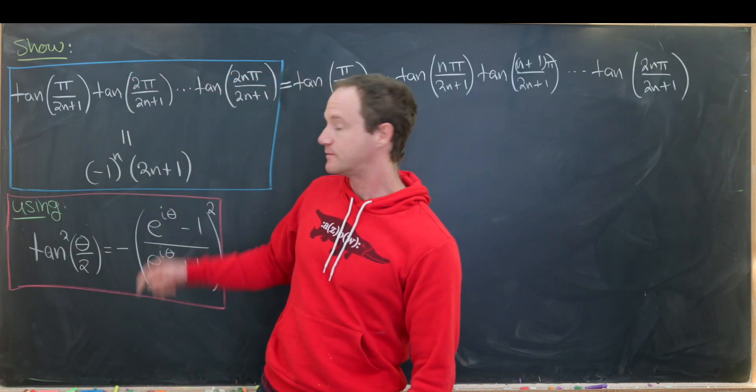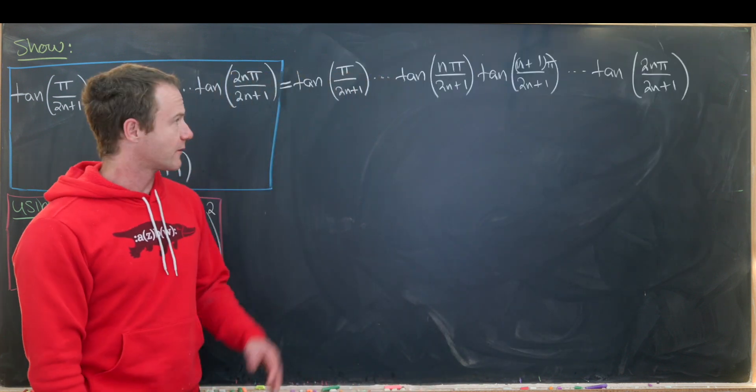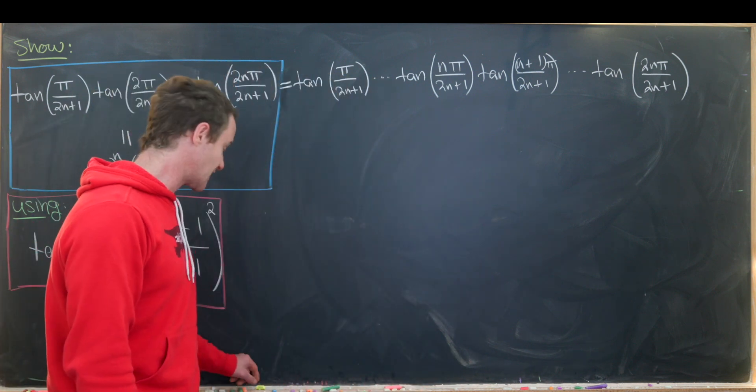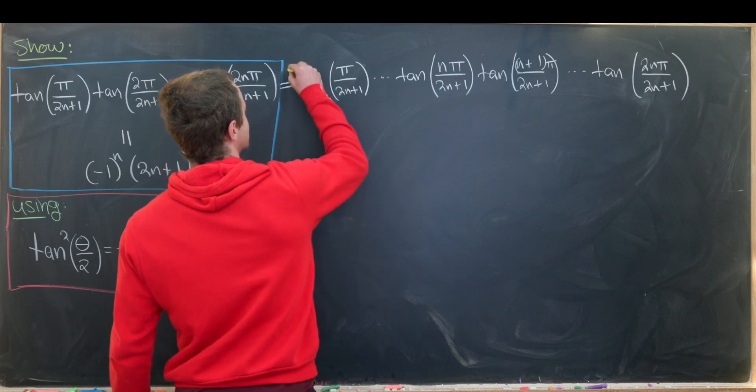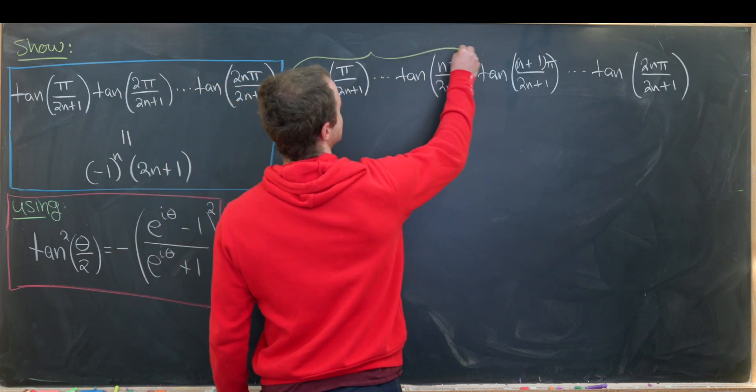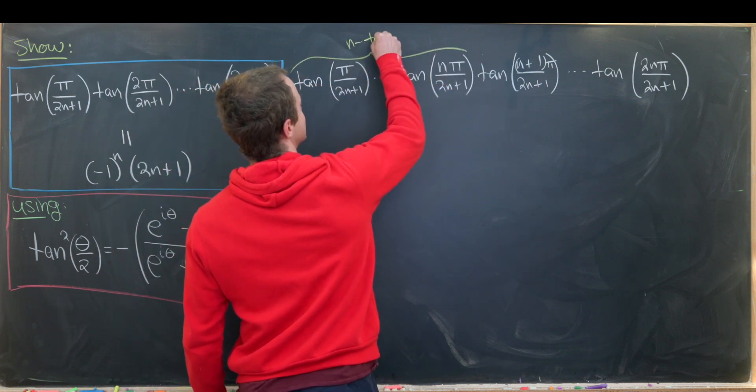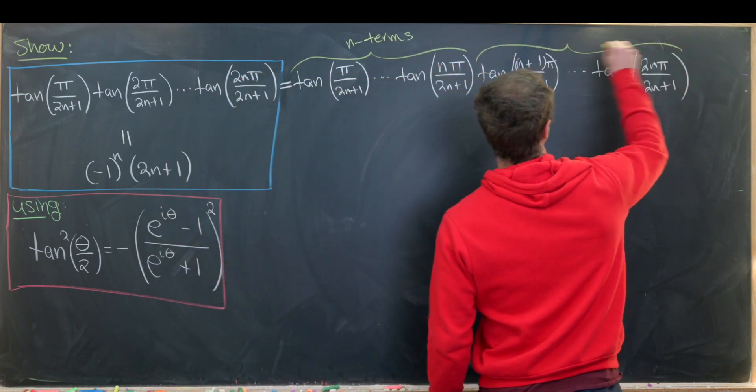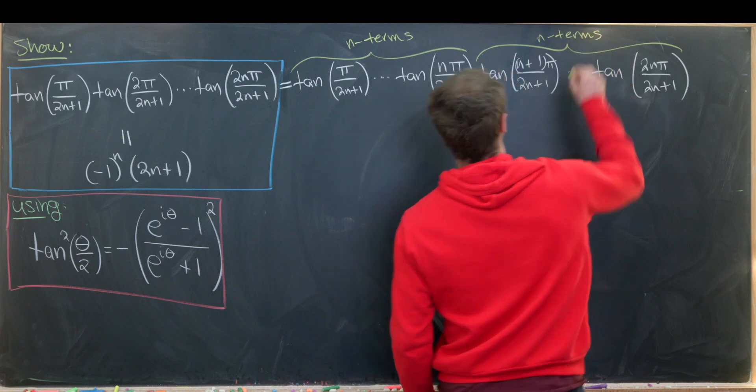So we derived our identity up to a sign on the last board and now we're ready to finish it off. So I've taken my original identity and expanded a little bit. So I've cut it in half. So notice I have these n terms of my product. So I'll write these are n terms. And here we've got another n terms of our product right here.